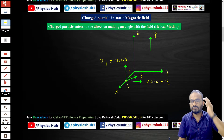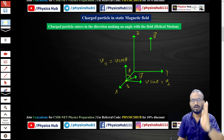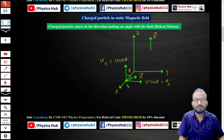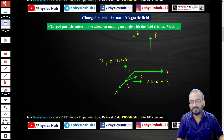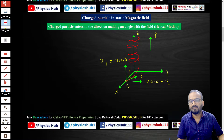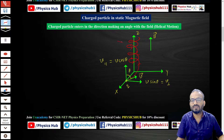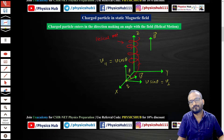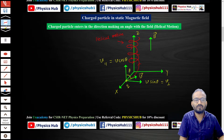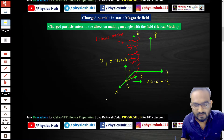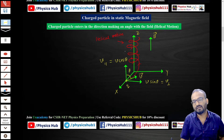Because of the parallel component, the particle also travels in the z direction — it moves upward — while simultaneously making a circular trajectory. The overall trajectory looks like a helix moving upward. This kind of motion is known as helical motion. The perpendicular component v_sinθ is responsible for the circular trajectory, while v_parallel is along the magnetic field.